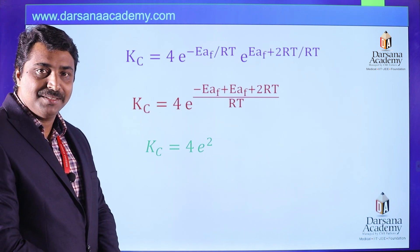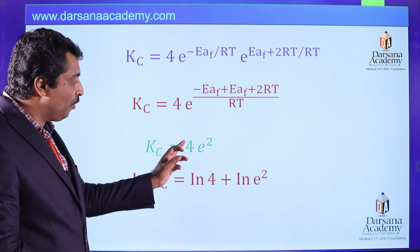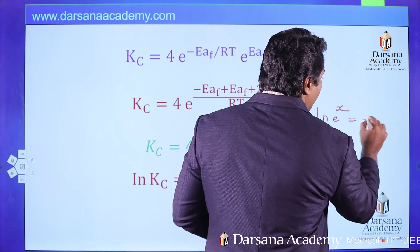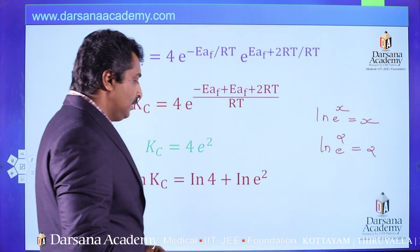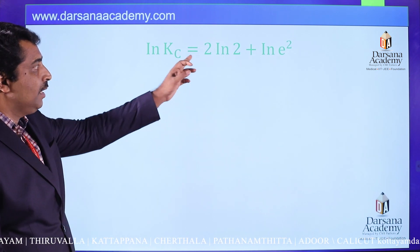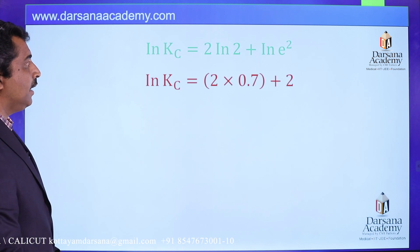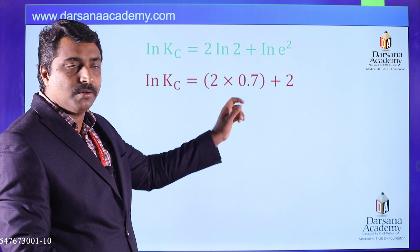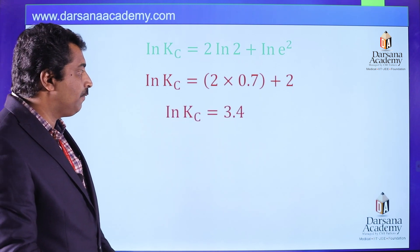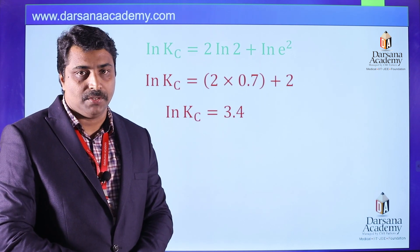Taking the natural logarithm of both sides: ln(KC) equals ln(4 times e squared), which equals ln(4) plus ln(e squared). Since ln(e raised to x) equals x, ln(e squared) equals 2. And ln(4) equals 2 times ln(2) equals 2 times 0.7 equals 1.4. Therefore ln(KC) equals 1.4 plus 2, which equals 3.4.